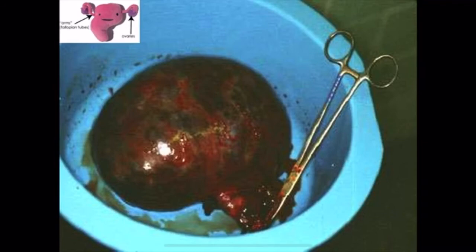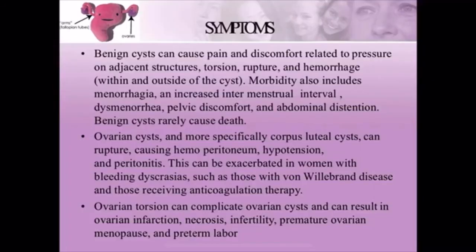Regarding symptoms, benign cysts can cause pain and discomfort related to pressure on adjacent structures. If the cysts are large in size, they will compress adjacent organs, causing discomfort and pain. Morbidity also includes menorrhagia — heavy periods — and increased inter-menstrual interval with inter-menstrual bleeding. The patient will also experience dysmenorrhea, which is painful menses, pelvic discomfort due to congestion of adjacent organs, and abdominal distension. Benign cysts rarely cause death.